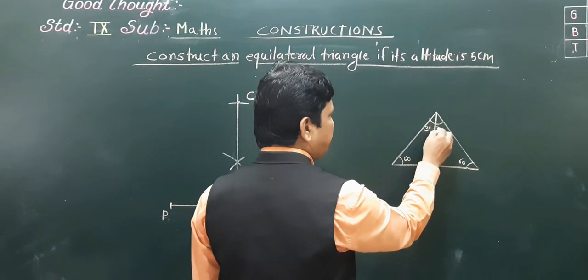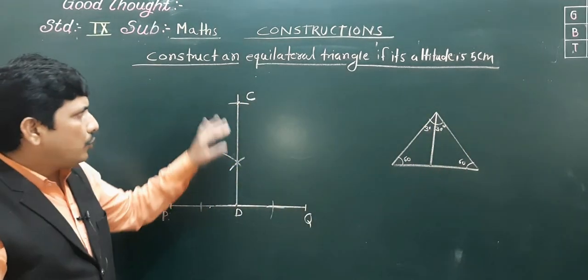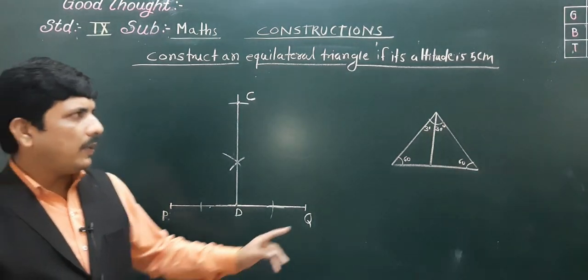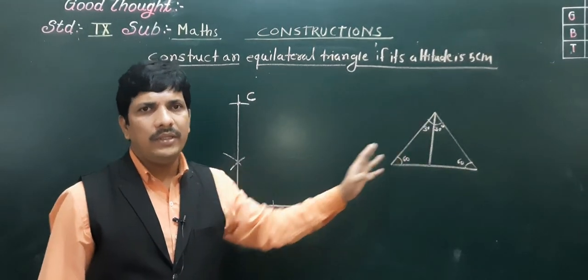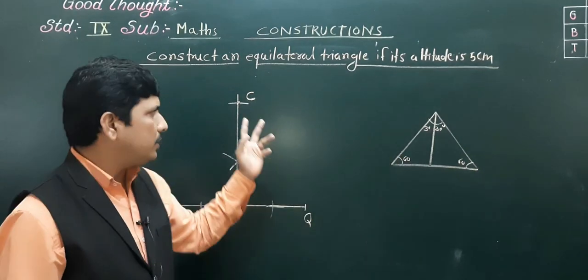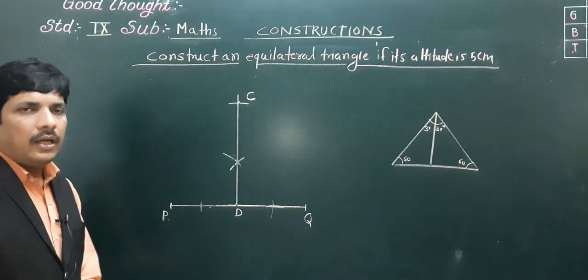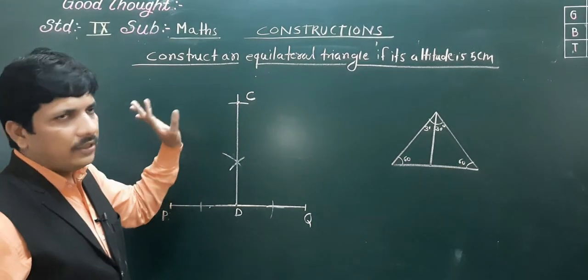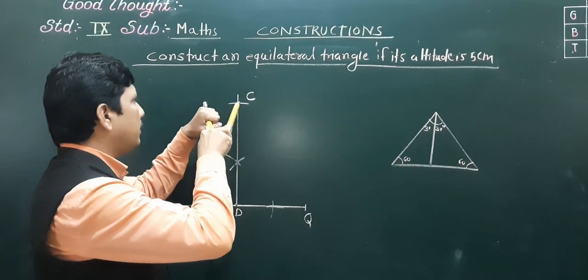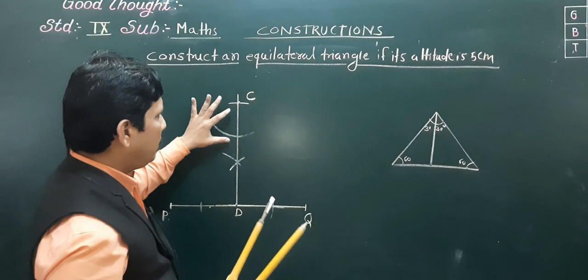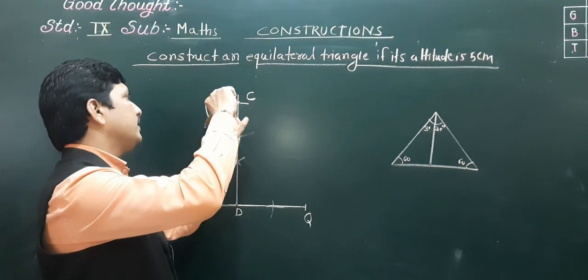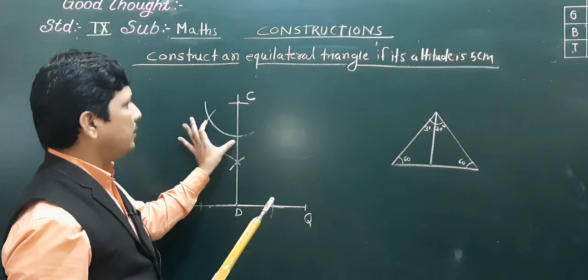Because the altitude bisects the base angle, each base angle of 60 degrees becomes two 30-degree angles. So we need to construct a 30-degree angle at point C on either side. This is because for an equilateral triangle, the altitude and median are the same — the altitude bisects the angle. So now from C with a convenient radius, mark an arc, and since 90 degrees is already there, we bisect the 60 degrees to get 30 degrees.